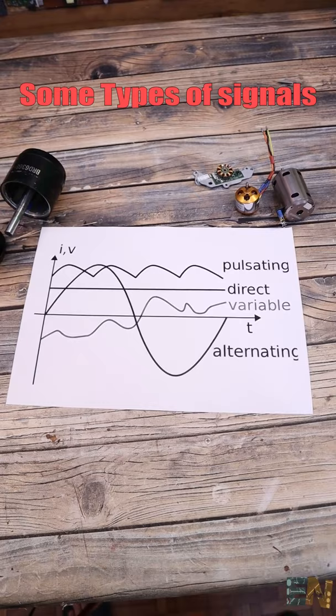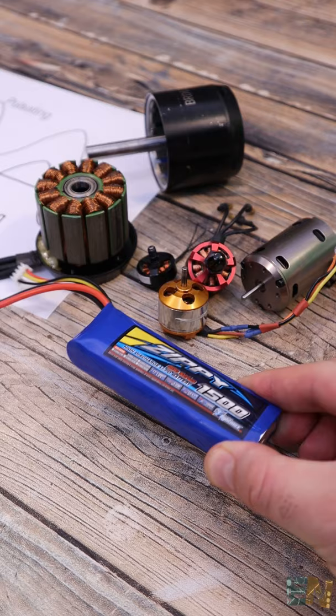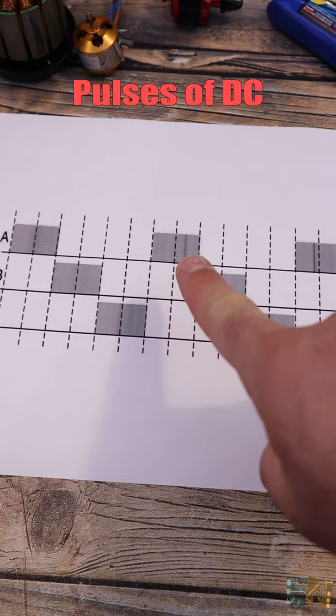So, where is this AC in a brushless motor? We use a battery to supply these motors and batteries are DC. These are the signals that we apply to the coils and these are just pulses of DC voltage.